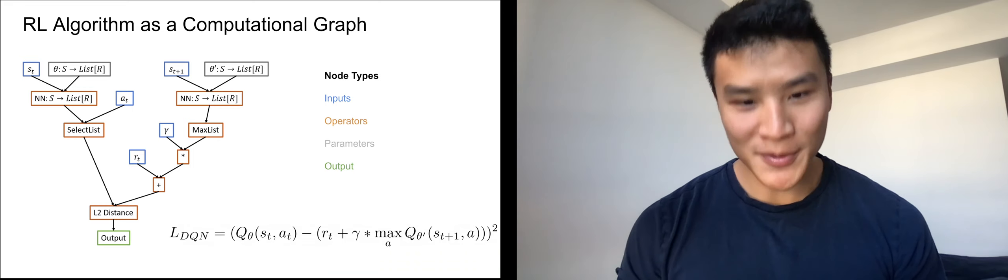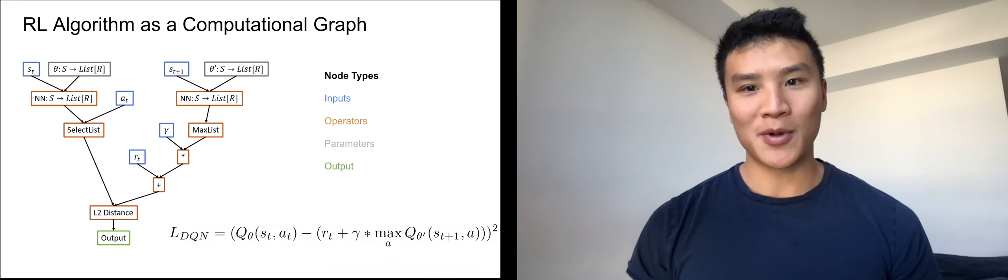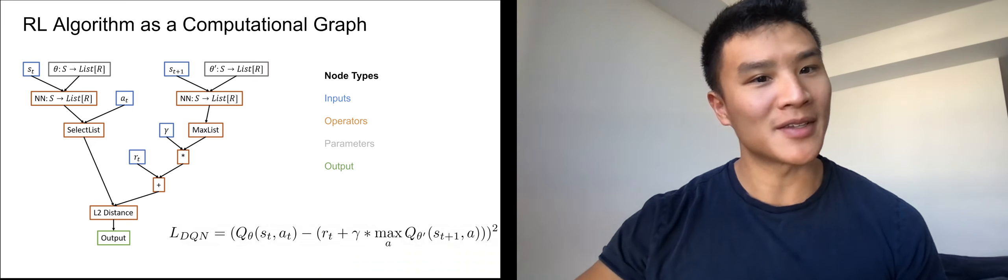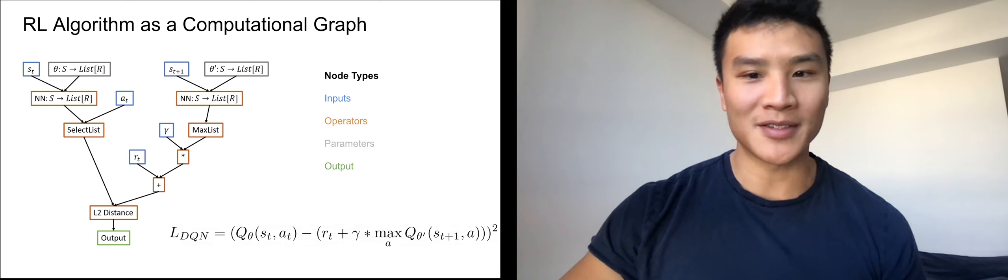As an example, here's the computational graph for DQN where we have input nodes in blue to represent things like the state, action, next state, and reward pairs.